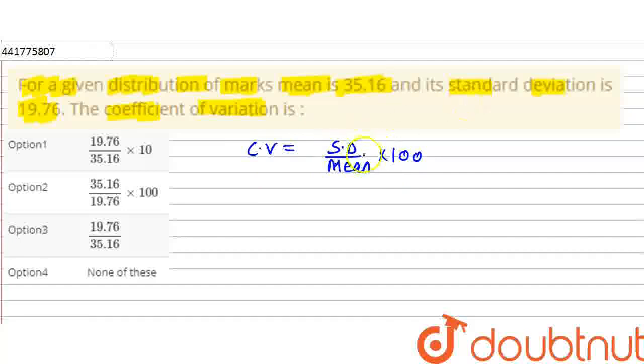So if you put the value of standard deviation and mean, then you will put the values in the formula. So you will know the coefficient of variation.